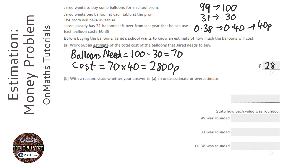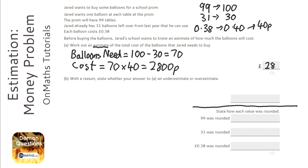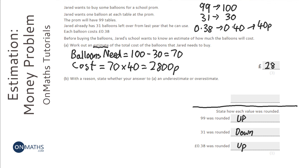Now it says: with a reason, state whether your answer is an underestimate or an overestimate. Anything below this line won't actually be given to you on the exam. So: 99 was rounded up, 31 was rounded down, and 0.38 was rounded up. Because we rounded 99 up, we need more balloons. We rounded the amount we already had down, so we need even more balloons. And we rounded the price up, so it's costing even more. So it's definitely an overestimate. In the exam, you would just say you rounded 99 up, 31 down, and 38p up — therefore it will be more money than you'll actually need.